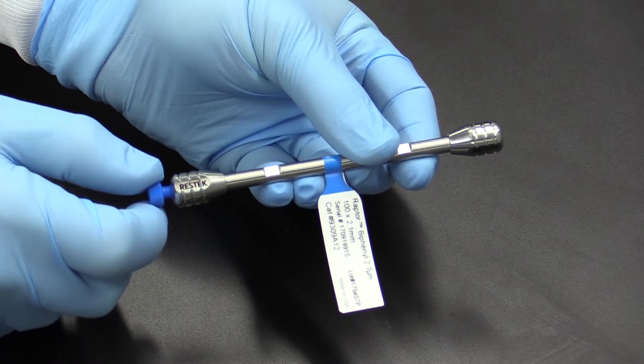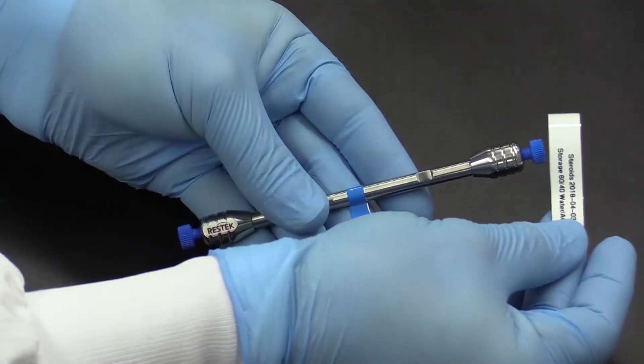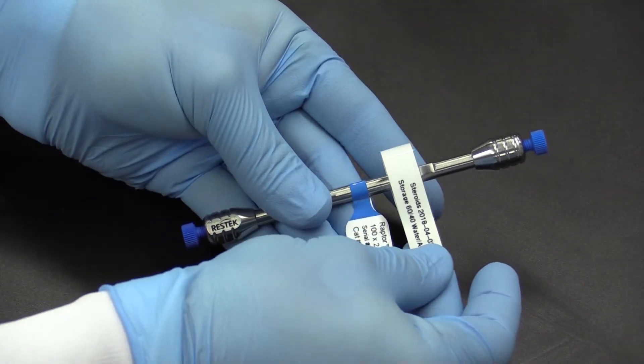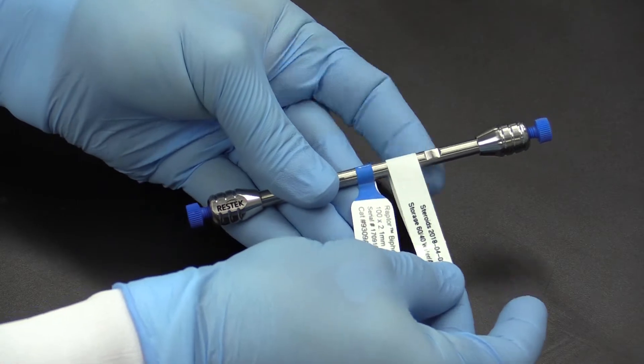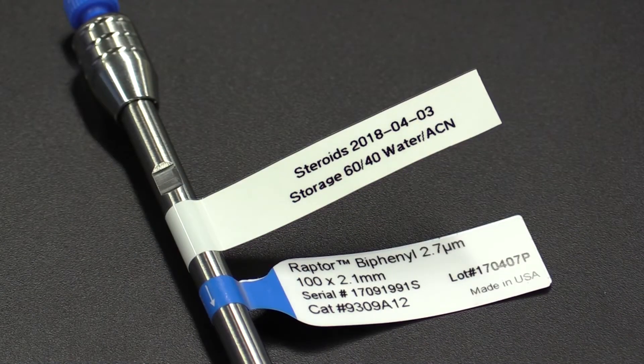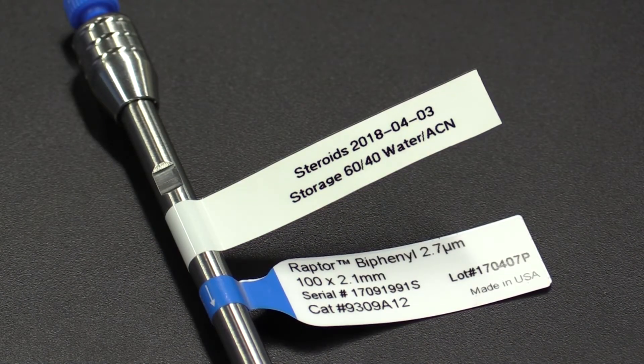And for either type of storage, make sure the column plugs are tight so it doesn't dry out. It's a good idea to label the column with the date and also the storage solvent so you know how to properly equilibrate it the next time you need to put it back to work.